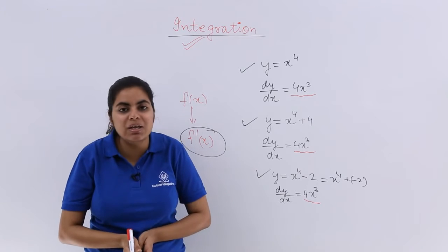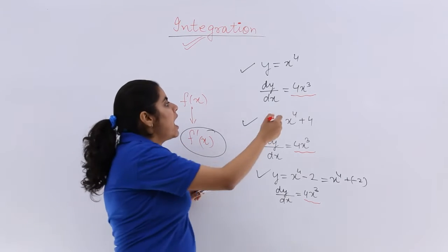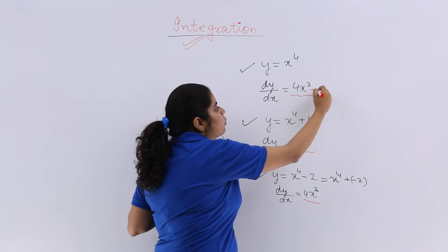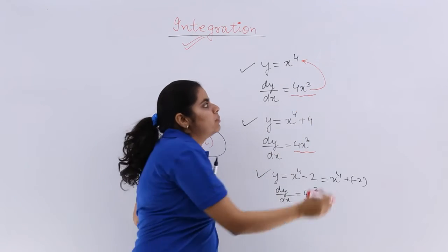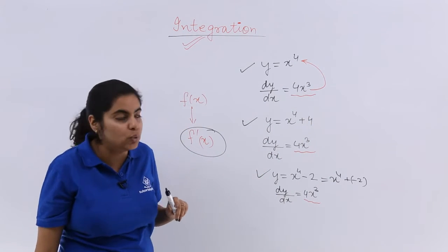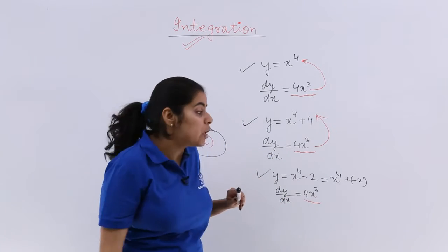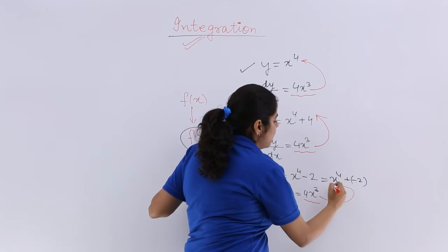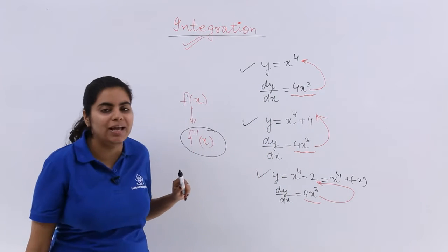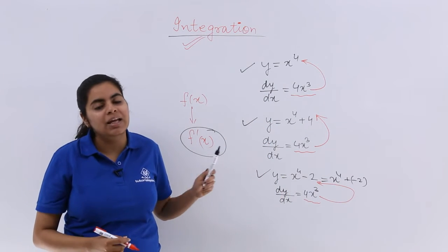Is called as integration. That means if I have 4x cube, obtaining x raised to the power 4 from 4x cube or obtaining x raised to the power 4 plus 4 or obtaining x raised to the power 4 minus 2 from 4x cube is called as my integration.